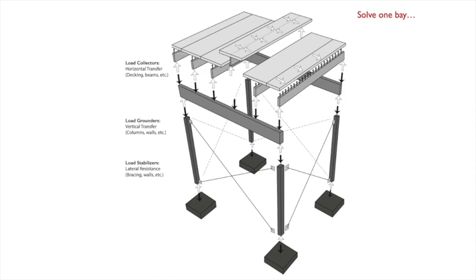My advice to you, figure out some of that initial stuff that we just talked about, and then solve one bay. Look at this very simple idea. We know that we have load collectors, things that span horizontally. In this case it can be a deck, it can be a beam. So all of these load collectors go from one element perpendicular to the other, which spans perpendicular to the other. And eventually then we get to what's called a load grounder. This can be a column or it can be a wall. And eventually we need load stabilizers. We don't want this bay to tip over.